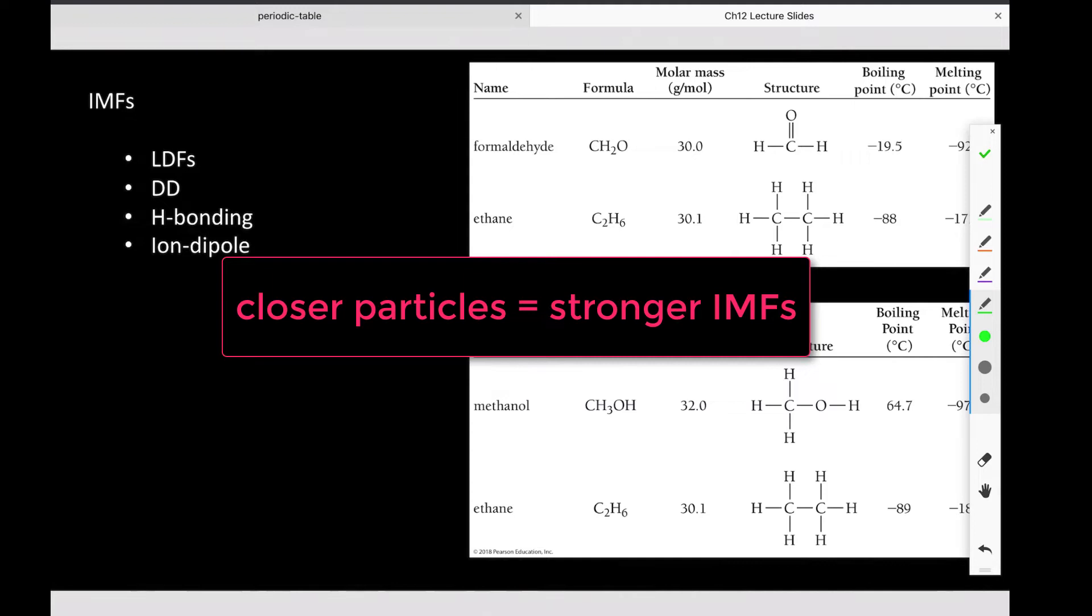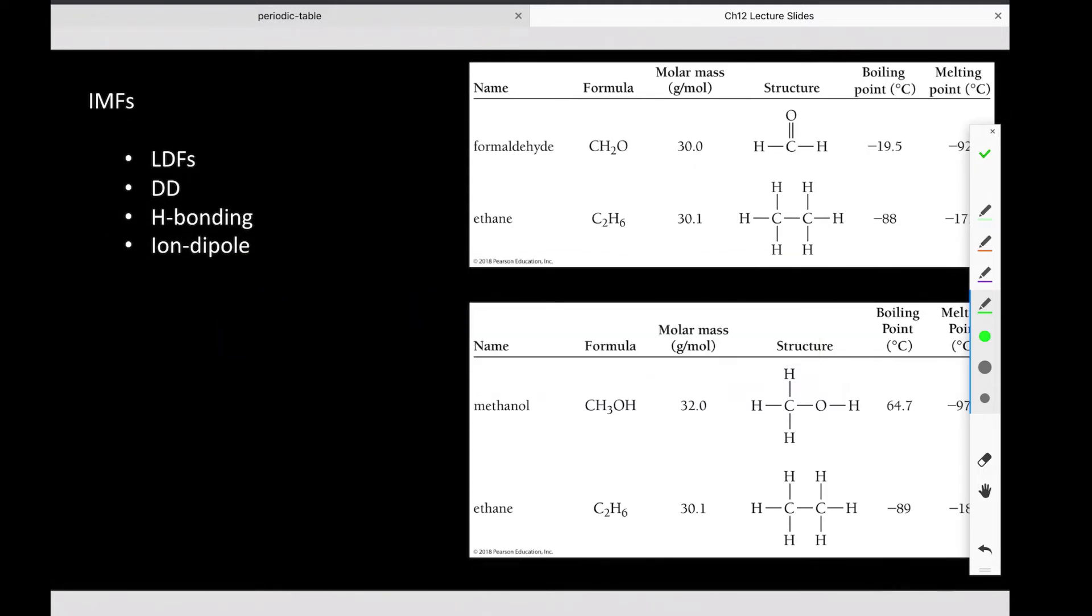We've talked about why boiling requires the input of energy because we have to break said attractive force. Now we put some formal labels on those attractive forces, rate them by strength, and you, courtesy of your Lewis structure drawing skills and VSEPR knowledge, can go ahead and decide which IMF belongs to which molecule.